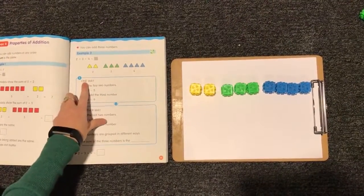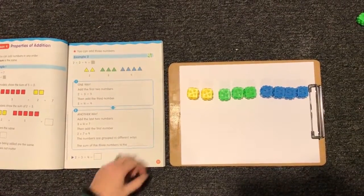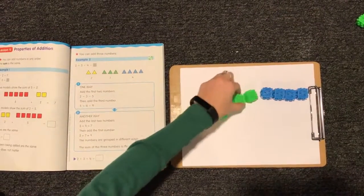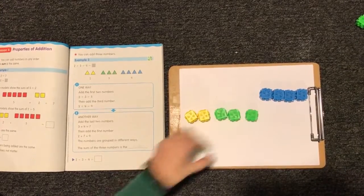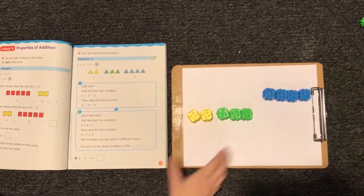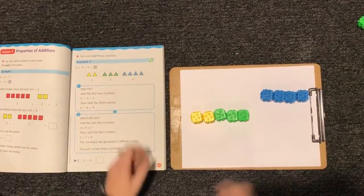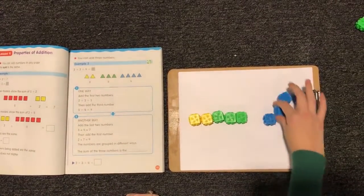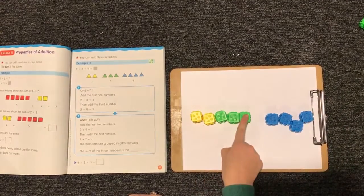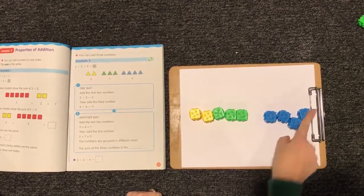So the first way we're going to do it is we're going to start with our 2 and our 3. So 1, 2, plus 3, 1, 2, 3, equals 1, 2, 3, 4, 5. So we have our 5. Then we're going to add on our third number. So we have 4 to add on. So 1, 2, 3, 4, 5, plus 4 is 6, 7, 8, 9.